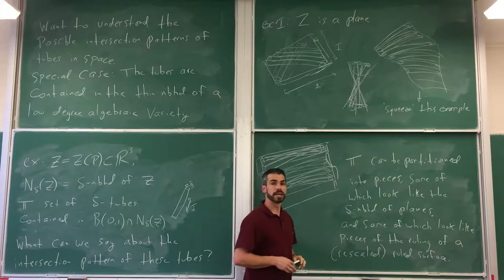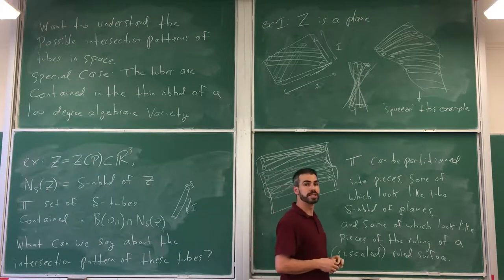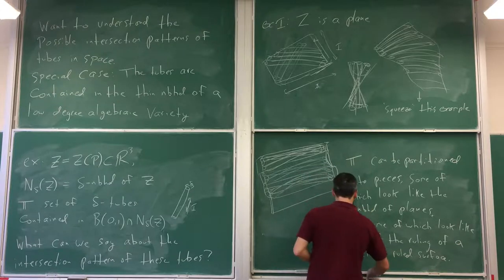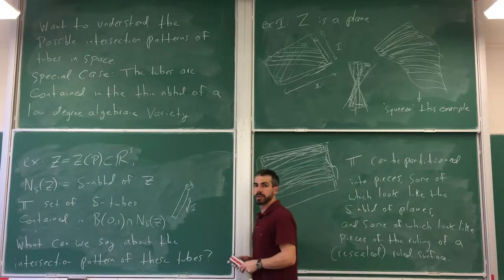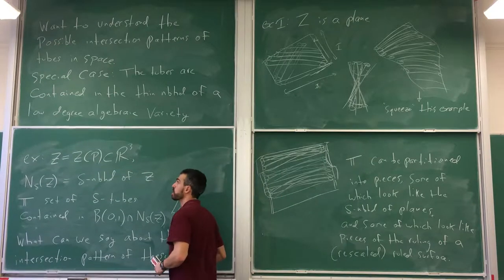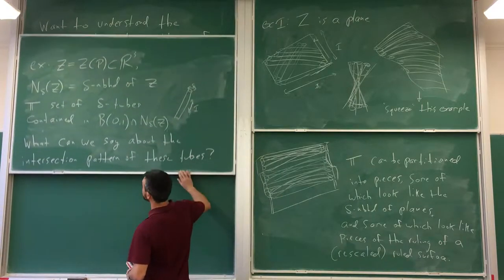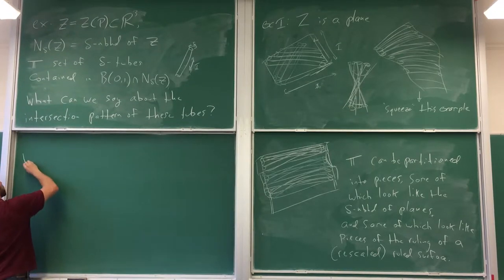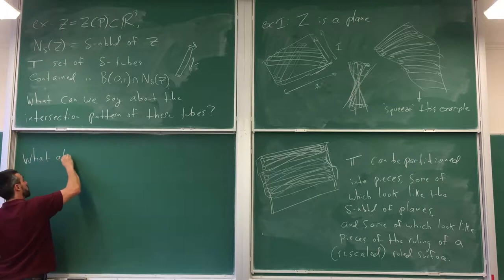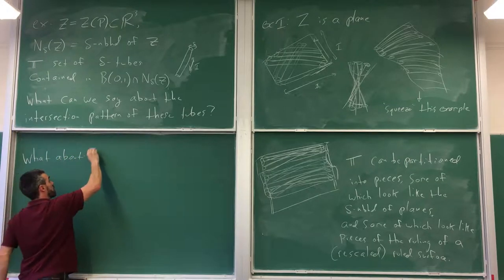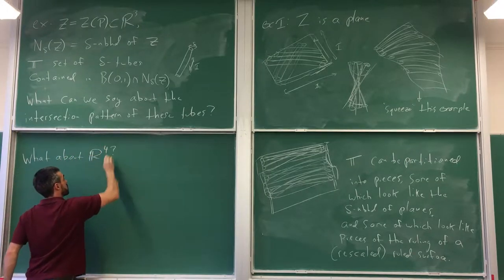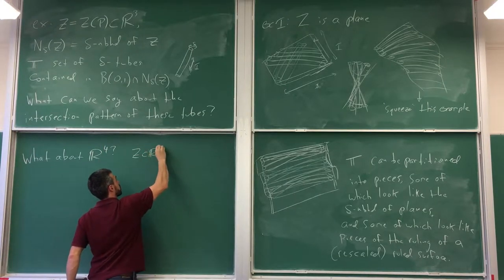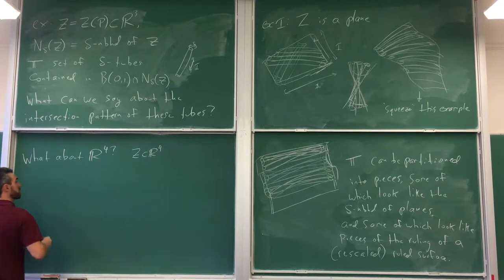Some version of this idea was used by Guth to prove new restriction estimates in R^3. There isn't a whole lot more to be done here in three dimensions. But if we jump up a dimension, things get a lot more complicated. So let's discuss what happens in R^4. Let's say I have some hypersurface Z in R^4.